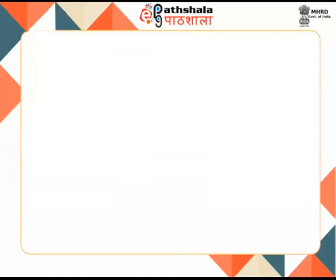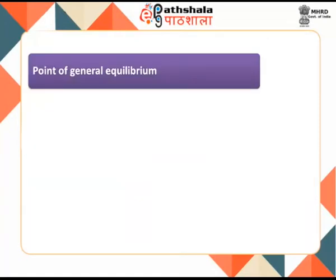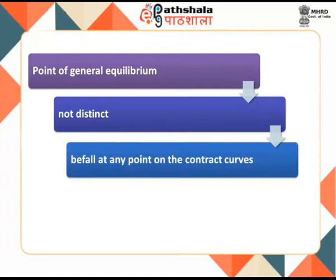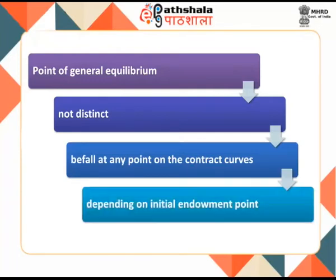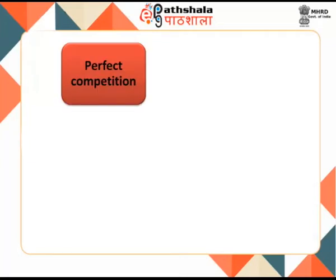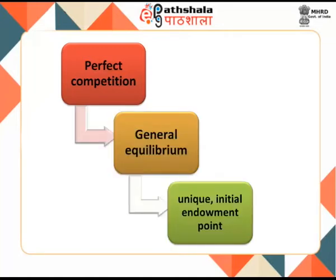It is important to state that the point of general equilibrium is not distinct since it may fall at any point on the contract curve depending on the initial endowment point. However, with perfect competition in the product and factor markets, only one such equilibrium case can be realized — that is, the general equilibrium can be unique — and it depends upon the initial endowment point. Let us first explain general equilibrium of exchange under competitive conditions.